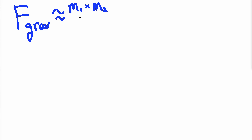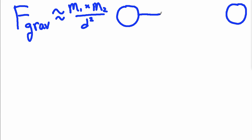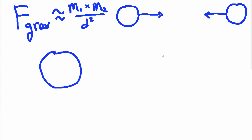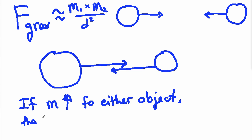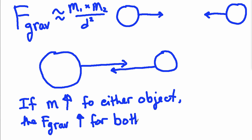The force of gravity is proportional to the two masses multiplied together, divided by their distance squared. If the object on the left were made much more massive — indicated by a much bigger circle — with the same size object on the right and the same distance apart, the force they each feel would get much stronger. The general rule is: if the mass goes up for either object, the force of gravity will also go up for both objects.